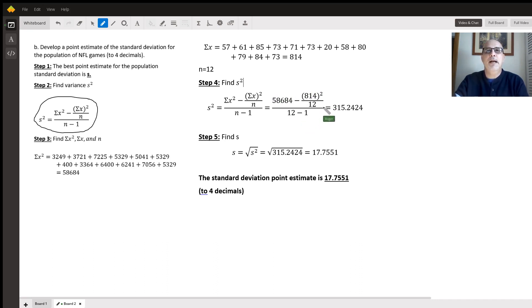So the sum of x squared is 58,604 minus 814 squared divided by 12, divided by 12 minus 1. Be careful when you put this into your calculator. You want to put this first, press enter, and then divide by 11 to get this. This is variance. We don't want variance, we want standard deviation. To find standard deviation, we just take the square root of the variance. That's 315.2424, and if we take the square root of that, that's 17.7551. This is the point estimate for the population standard deviation.